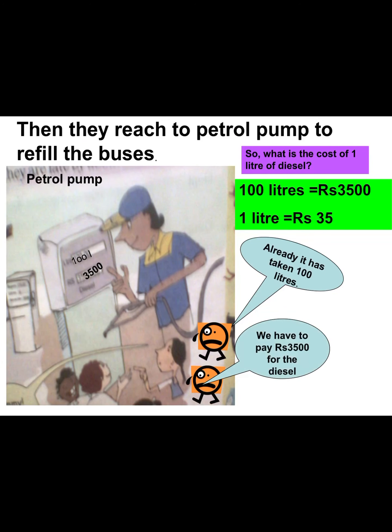After crossing the bridge over Narmada River, all the buses have to refill petrol because they are nearly empty. So they reached a petrol pump to refill. Can you guess how much petrol they have to take for these 6 buses? Yes, children, it is 100 liters. And if 1 liter costs Rs. 35, what is the cost of 100 liters of petrol? Yes, children, it is Rs. 35,000, as shown in the petrol pump display.